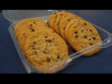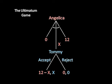To refresh your memory, in the original ultimatum game, Angelica and Tommy were trying to split a dozen cookies. Angelica made a take-it-or-leave-it offer to Tommy. If Tommy accepted, then he got that number of cookies and Angelica got the rest. But if he rejected, both got nothing. That gave us this extensive form, and we concluded that Angelica offers Tommy one cookie in equilibrium and gets to keep the other 11 for herself.